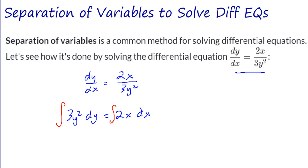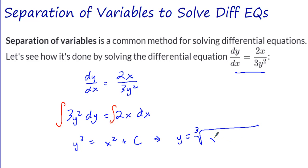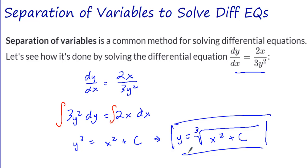If you have me for AP Physics Calculus, we have done this before — we set up our differential, move things to both sides, and then we're primed and ready to integrate. The integral of 3y² with respect to y is y³. The integral of 2x with respect to x is x² + C. Which means when we solve for y, y is equal to the cubed root of (x² + C). And this is my solution to my differential equation via separation of variables.